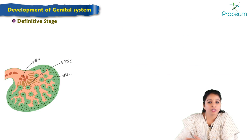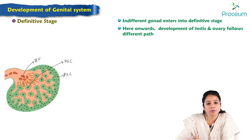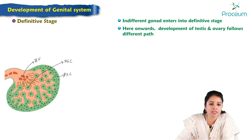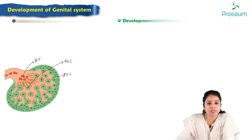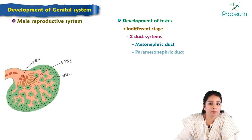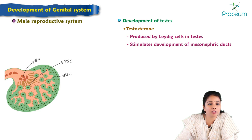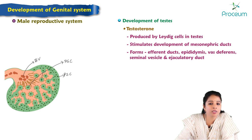Next we move on to the definitive stage. The indifferent gonad enters the definitive stage with the development of the testis in males and ovaries in females. During the indifferent stage there are two duct systems: the mesonephric duct and the paramesonephric duct. The testosterone produced by the Leydig cells in the testis stimulates the development of the mesonephric ducts to form the efferent ducts, epididymis, vas deferens, seminal vesicles, and ejaculatory ducts.